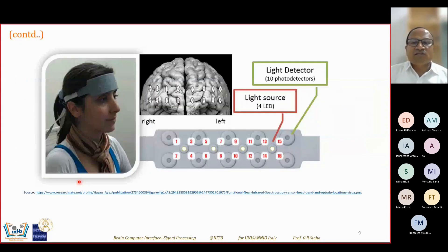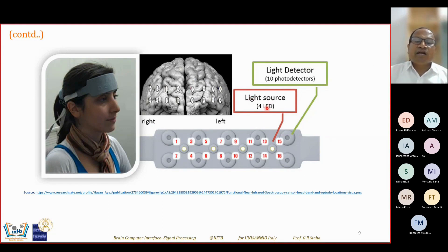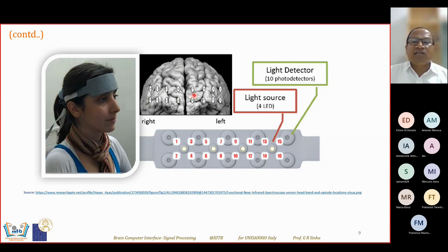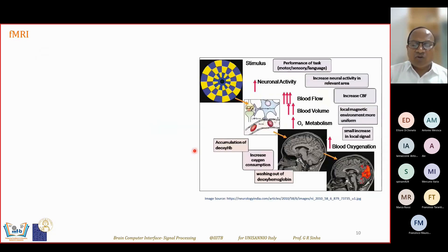The light source emits light which goes inside the brain, and the light detector records the returning signal. This is how fNIRS works.